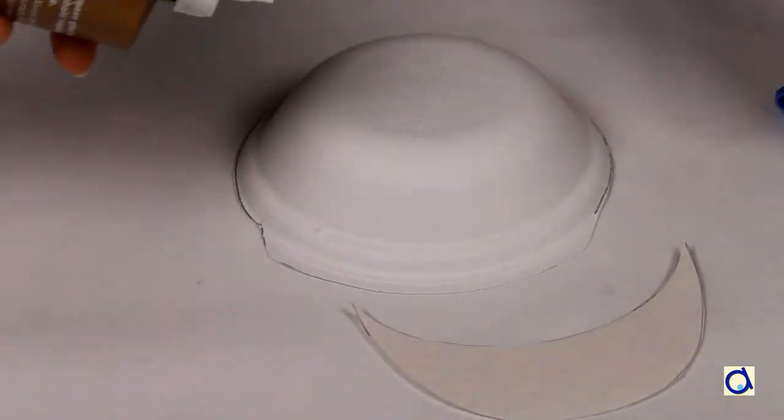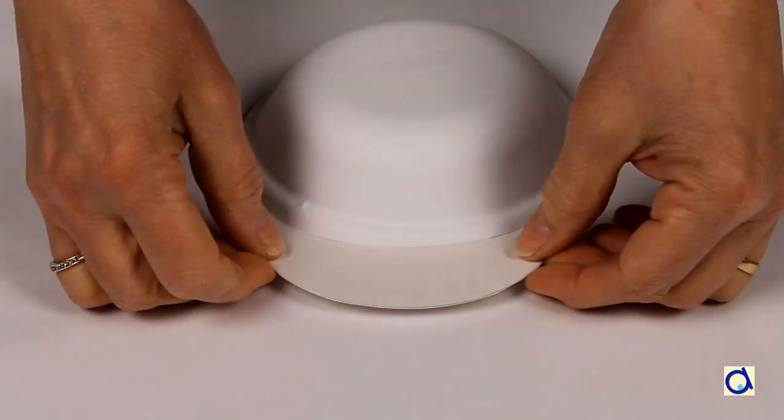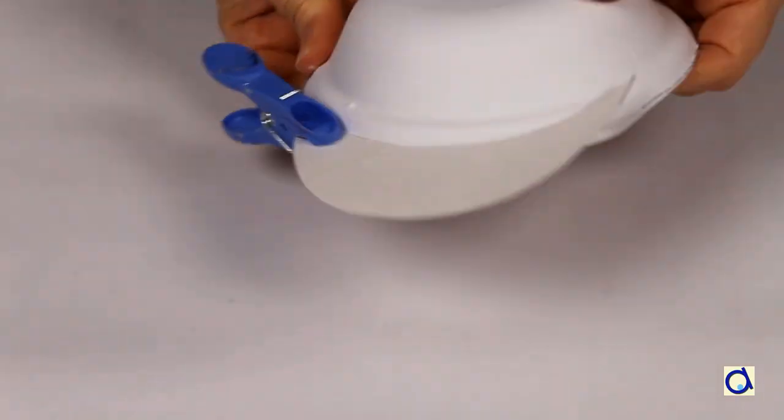Glue the visor to the flat edge that's left on the ball with white glue. Hold the visor in place with clothespins.